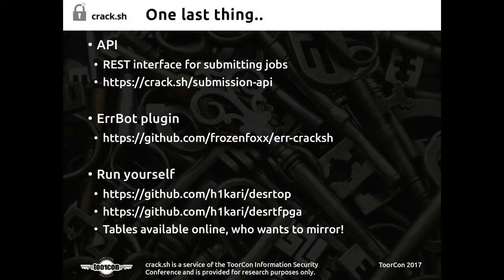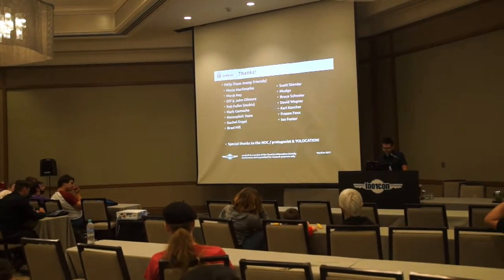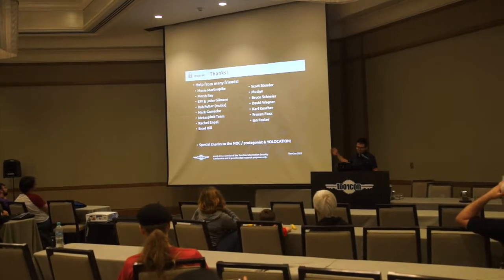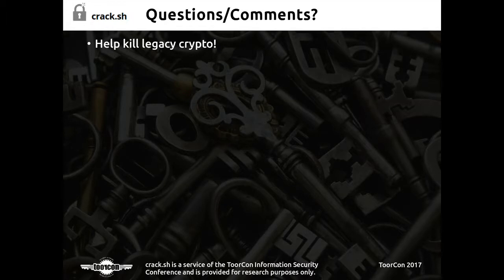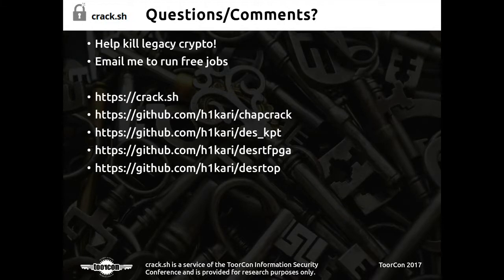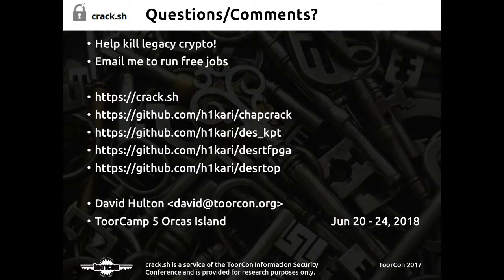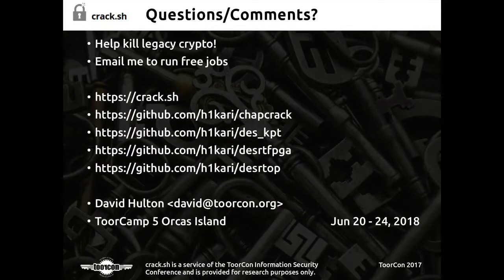Check out crack.sh — we have an API you can tie directly into Responder to automatically crack NT hashes. There are plugins including an IRC bot if you want to submit stuff directly through Slack or IRC. All the code for the rainbow table is up on GitHub if you want to run one of these systems yourself. We haven't figured out the best way to host or mirror the six terabyte rainbow table, but if you have ideas let us know. Help kill legacy crypto — if any of you want to crack some stuff, shoot me an email and I'll let you run free jobs on the system.